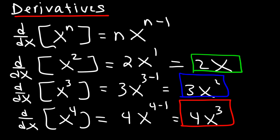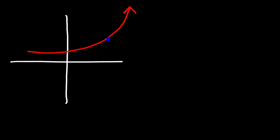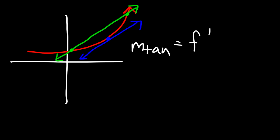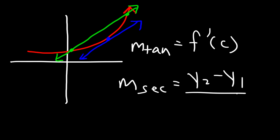But what does it mean? The derivative is a function that gives us the slope of the tangent line of some original function. A tangent line is a line that touches a curve at one point. You also need to be familiar with a secant line — a secant line is a line that touches a curve at two points. The slope of the tangent line is equal to the derivative of a function at some value. To calculate the slope of a secant line, you use rise over run: y2 minus y1 over x2 minus x1.